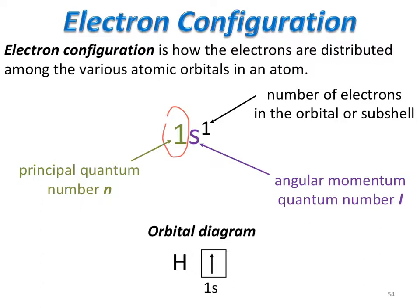We can also draw orbital diagrams instead of in the stair-step fashion seen previously. They can actually be drawn as boxes — here's the 1s, here's the 2s, and here would be the 2p subshells.